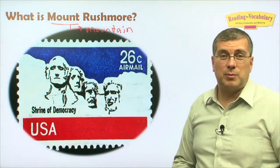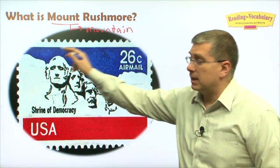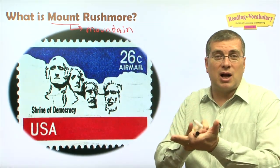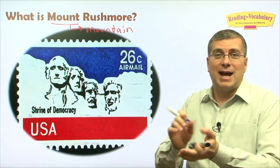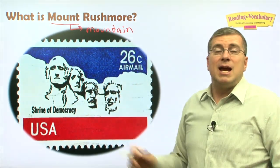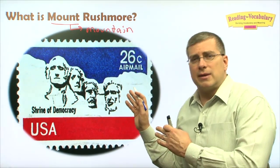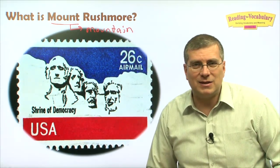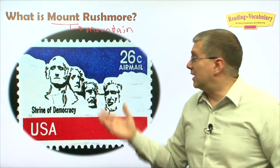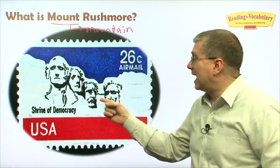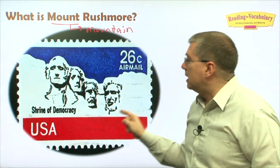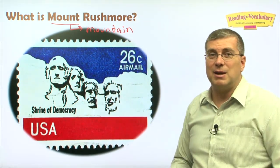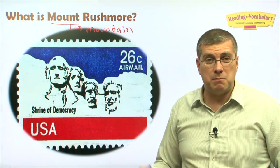Next, we can see another example — this is a stamp in America. Like coins, famous people, famous places, and famous events are used as pictures on coins and stamps. Now we see the stamp of Mount Rushmore. This is a special stamp made for a certain time. Mount Rushmore is very important in American history.